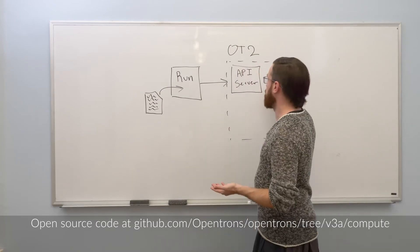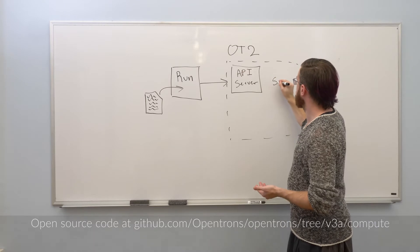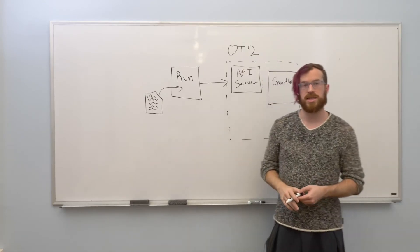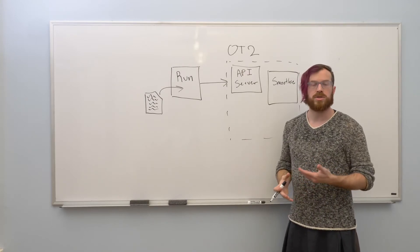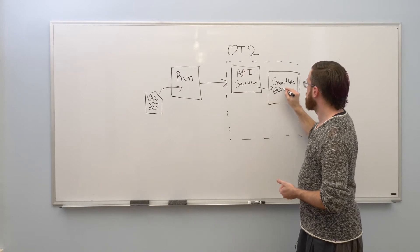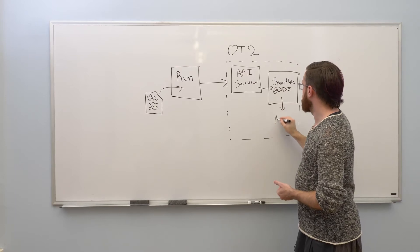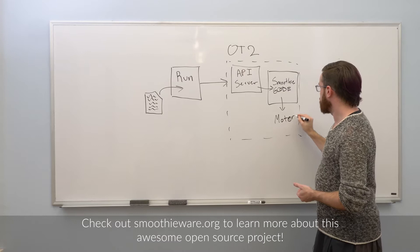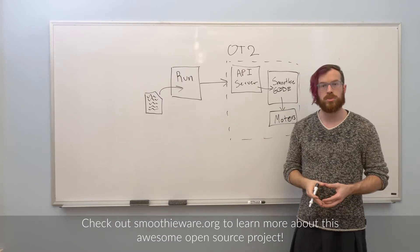The specific control device that we use is called a smoothie board. Smoothie is designed as a CNC control board that translates from low-level commands called g-code into electrical signals that cause the motors to move.